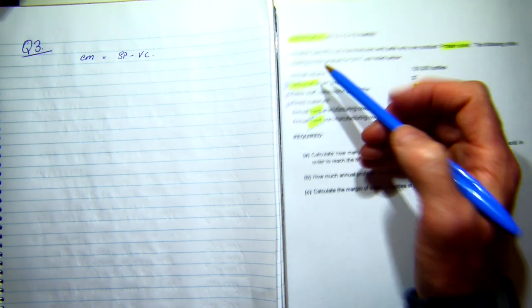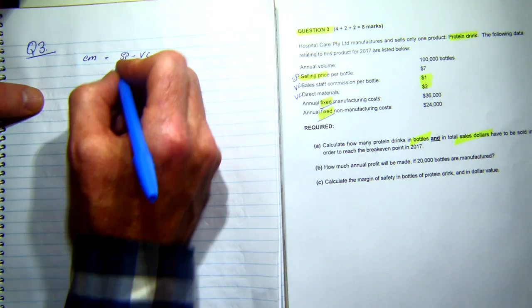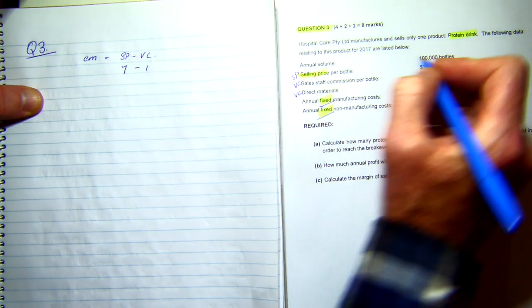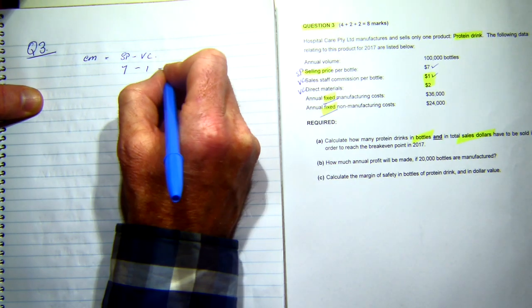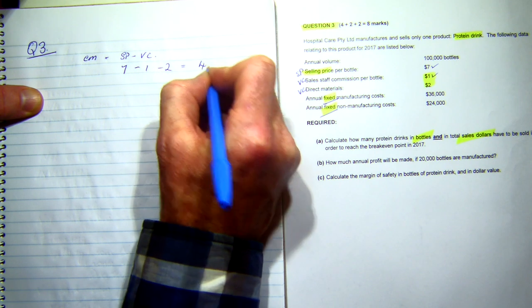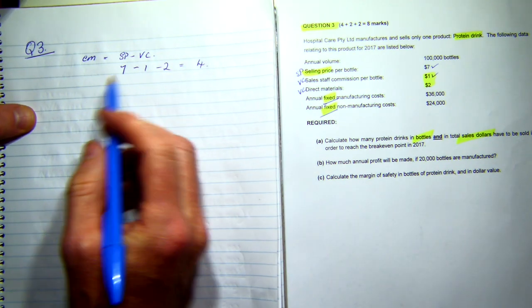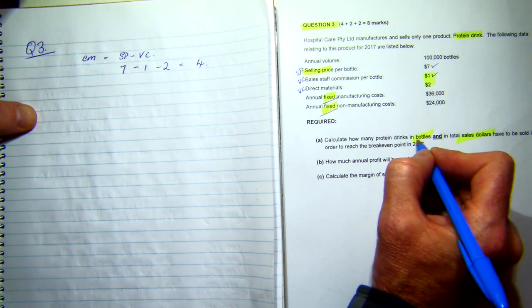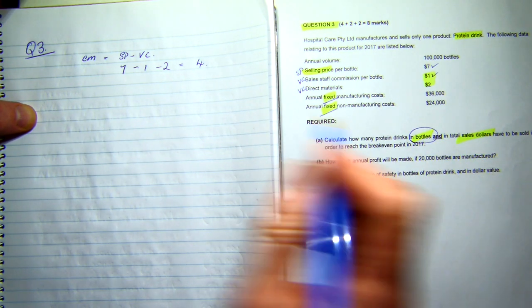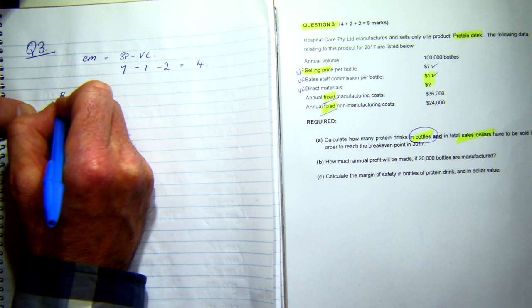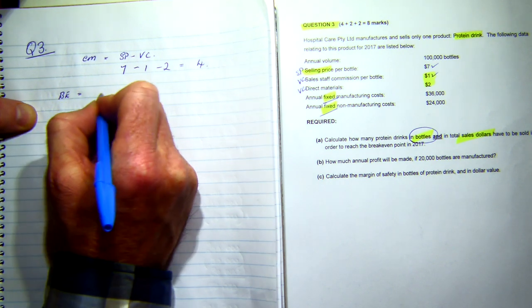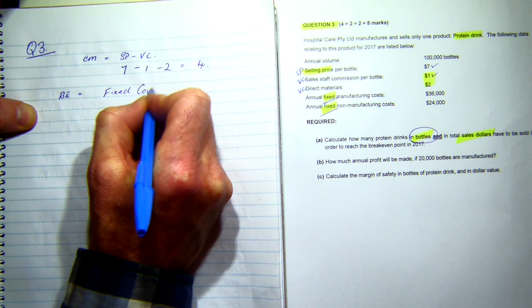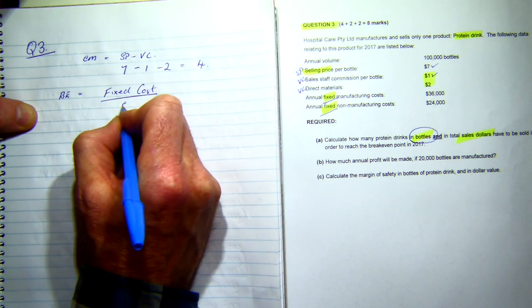So I know that my contribution now will be seven, which is that figure there, minus one, minus two. So my contribution margin is four. Now, to calculate break-even in quantity, we're talking about bottles here, break-even. My break-even equals my fixed cost divided by my contribution margin.